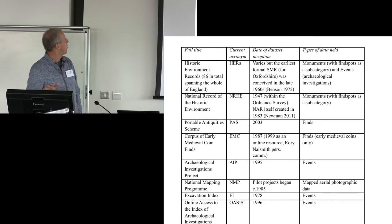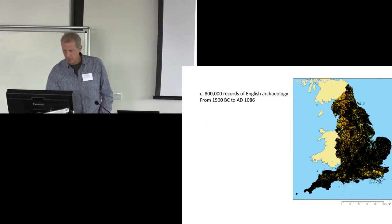So this just gives you a sense of the various data sources that we have. There's the HERs, SMRs as were. There's the National Record of the Historic Environment, the PAS. There are various smaller but important databases, like in this case the Corpus of Early Medieval Coin Finds, the AIP, the National Mapping Programme, the Excavation Index, which is fantastic, and then OASIS, the Online Access to Index of Archaeological Investigations. There are various other things, but these are the major sources of data. And as you can see, and as you all know, they record slightly different things in slightly different ways. So there are three basic categories: monuments, finds, and events. And obviously things like the AIP and the Excavation Index are more to do with events, whereas HERs and the National Record of the Historic Environment are more to do with monuments.